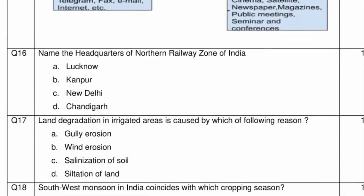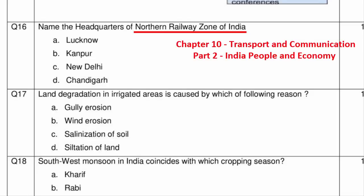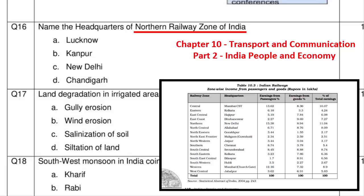Question 16 asks for the headquarters of the Northern Railway Zone of India. The answer is available in Chapter 10 Transport and Communication, Part 2 book, under the topic Rail Transport. A table showing zone-wise Indian Railway income and headquarters reveals that the headquarters of the Northern Railway Zone is Option C — New Delhi.